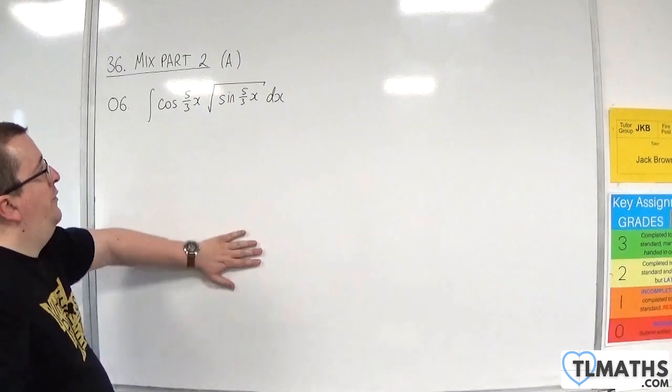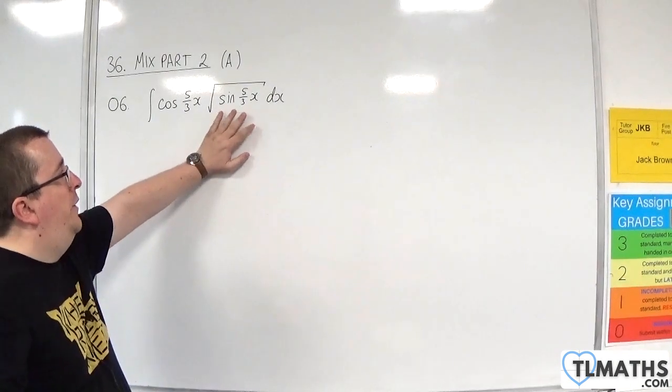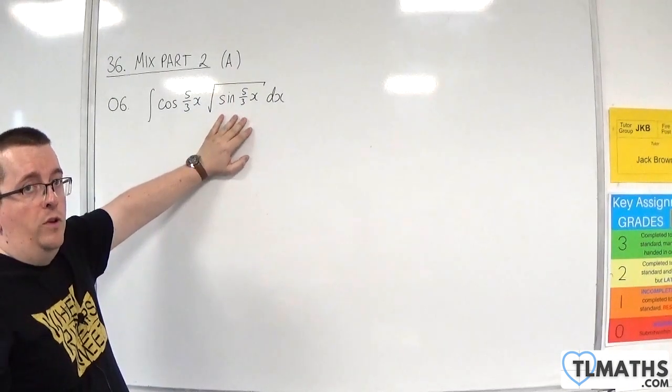But as I said, if you want to work through this substitution, u is equal to sine of 5 thirds x will be what you want to use.